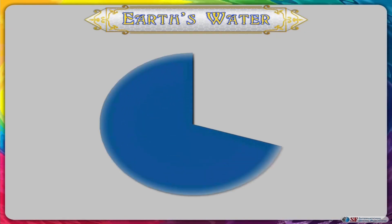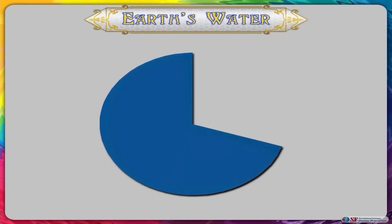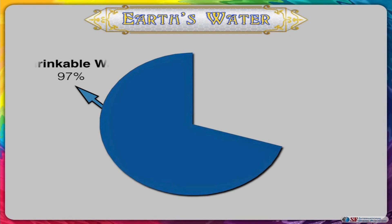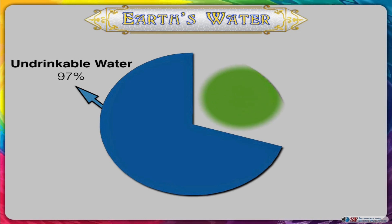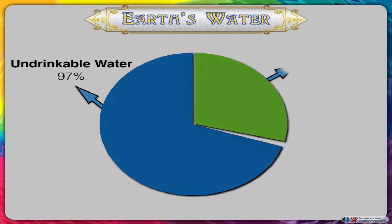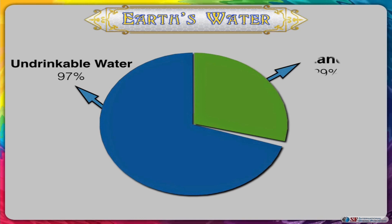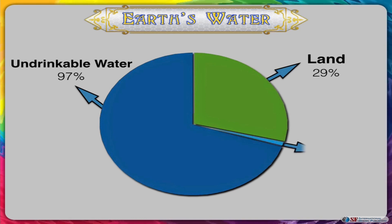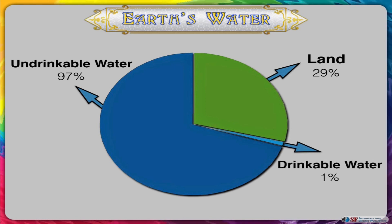97% of the water on our planet is found in the oceans and is too salty for us to drink. Only 3% of the water on earth is drinkable, which is known as fresh water. 98% of this fresh water is trapped in glaciers and ice. So only 1% of the water is left for us to use.